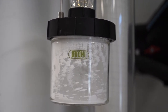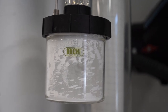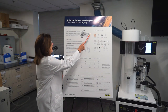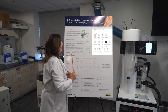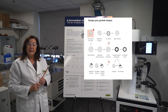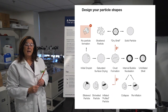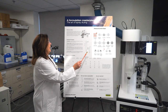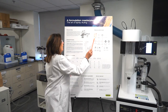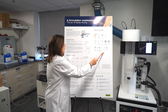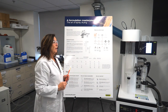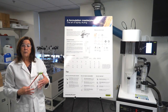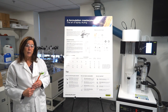Spray drying is a particle engineering technology, and that's one of its main benefits. So when we design our formulation, we're going to use different chemistries, different excipients, and not everything is going to have the same morphology. We might have something that's a nice solid particle, or something that is more collapsed or looks like a raisin — this all has to do with the heat applied or the nature of what you're working with.